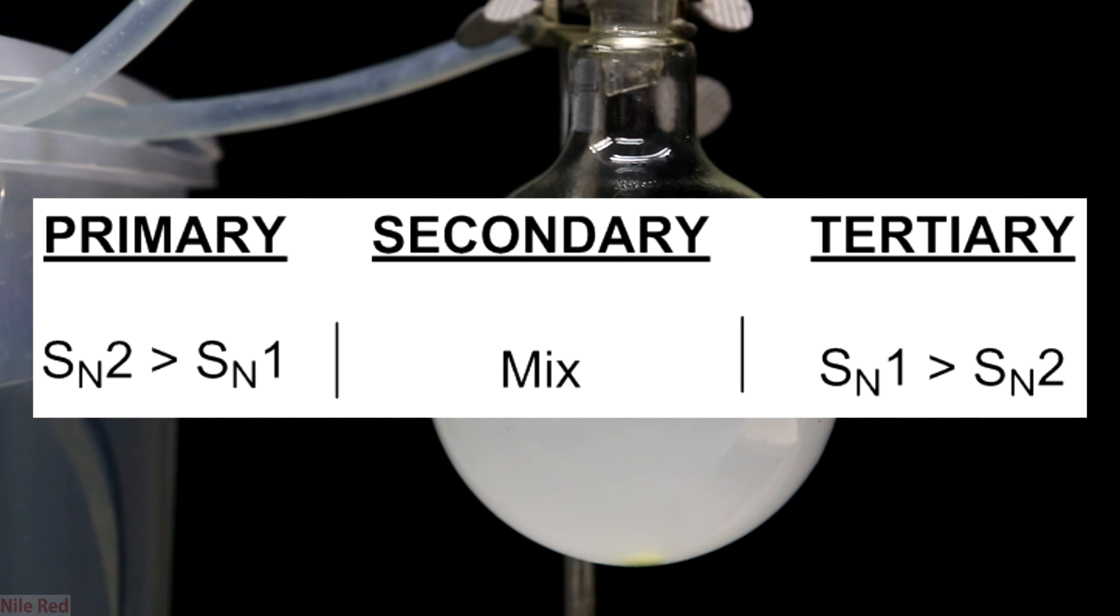When the carbon only has one substituent the mechanism is pretty clear-cut because SN1 is really not favored but SN2 is highly favored. The same thing goes for the tertiary or when there's three carbons attached: the SN2 is highly unfavored and the SN1 is highly favored. The hardest part is when we're working with a secondary carbon because this is going to be a mix of both mechanisms and it's kind of hard to predict which one will predominate. Anyway that's a huge tangent and a topic for another video and I think we should get back to the reaction at hand.